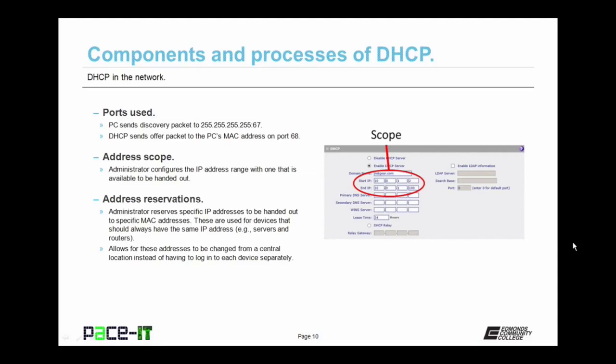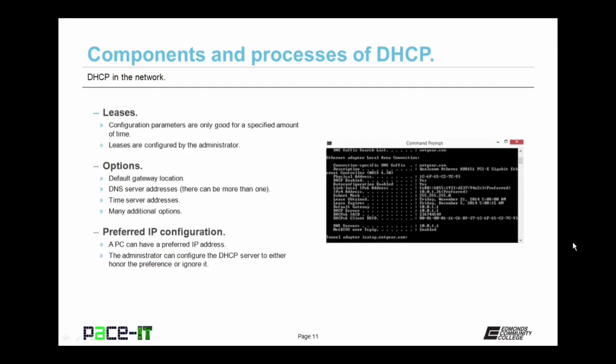Address reservations allow these addresses to be changed from a central location instead of having to log into each device separately. Part of the DHCP process are what are called leases. The DHCP server hands out IP configuration information but sets a time limit for how long that configuration is good — this is called the lease. The parameters are only good for a specified amount of time, and the administrator can configure how long the leases are.